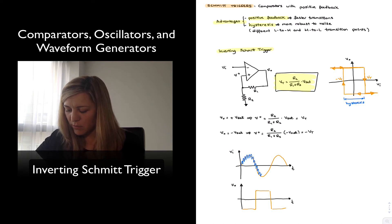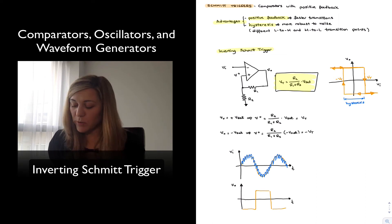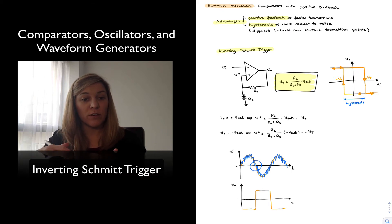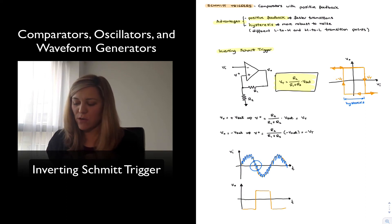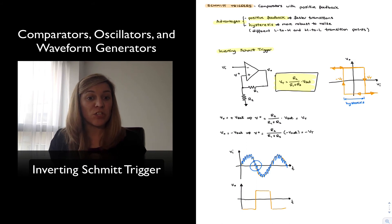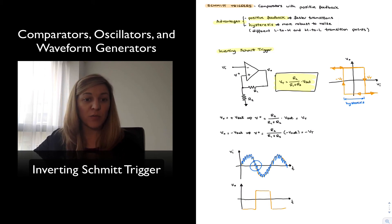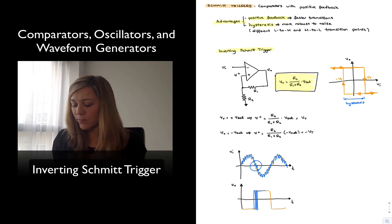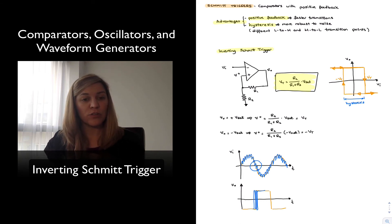Now let's imagine our input signal had some noise, so it wouldn't be a clean signal but rather a noisy one. If we zoom into the zero-volt transition point, we see that due to the noise, the input signal can cross zero a few times before it finally becomes consistently negative — or likewise in the opposite direction. In an open-loop comparator with no hysteresis, every time the input crosses zero because of noise, the output voltage will change, producing several small transitions instead of a clean transition.